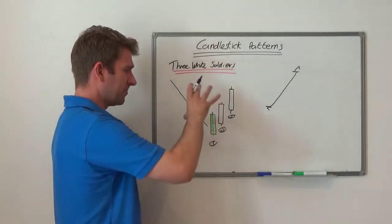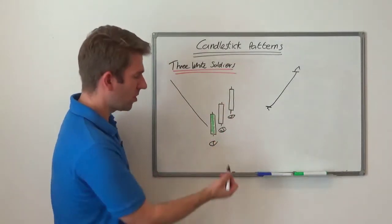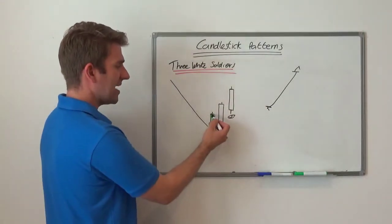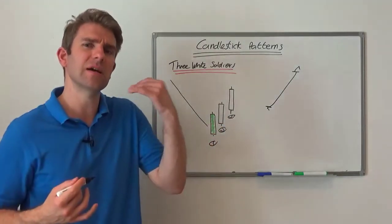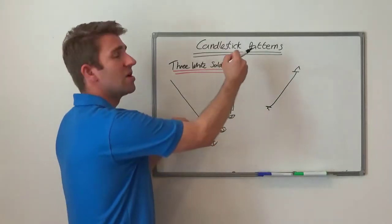It has to be above the prior day's open. We don't want to have it down here. That doesn't make any sense whatsoever. And it has to be also below the prior day's close. That seems counter-intuitive.